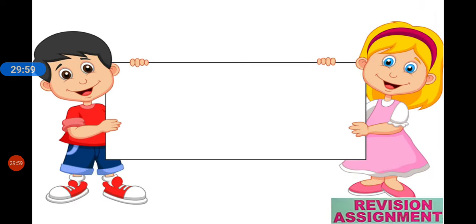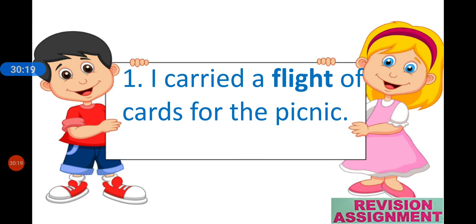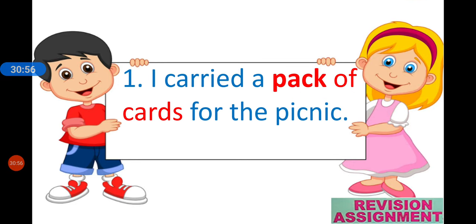Question E: correct the errors in the use of collective nouns. Sentence 1: 'I carried a flight of carts for the picnic.' The collective noun 'flight' is used for birds — flight of birds. For carts, the correct collective noun is 'pack.' So the answer is: 'I carried a pack of carts for the picnic.'